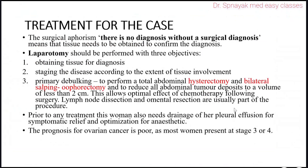Let's discuss the treatment of the case. First, surgical exploration — there is no diagnosis without surgical diagnosis, meaning tissue needs to be obtained to confirm the diagnosis. Second, laparotomy should be performed with three objectives: obtaining tissue for diagnosis, staging the disease according to the extent of tissue involvement, and primary debulking — performing a total abdominal hysterectomy and bilateral salpingo-oophorectomy to reduce all abdominal tumor deposits to a volume of less than 2 cm, which allows optimal effects of chemotherapy following surgery. Lymph node dissection and omental resections are usually part of the procedure.